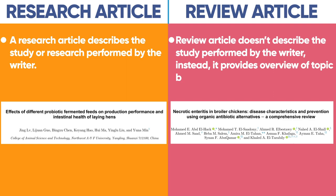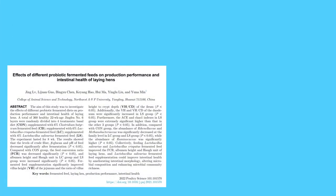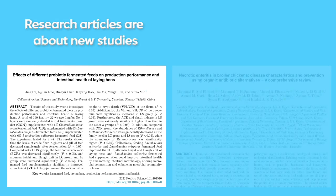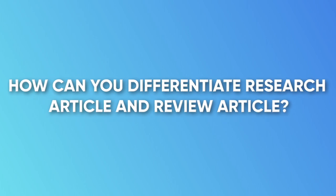So basically, research articles are about new study that has never been published, and review articles are about previously published studies and their summaries. How can you differentiate a research article and a review article?